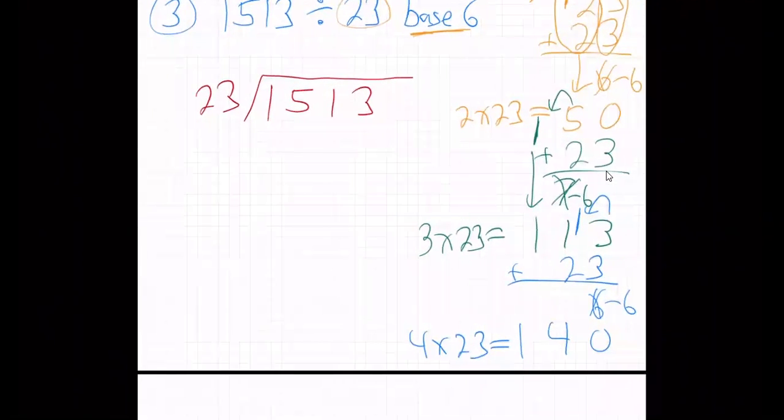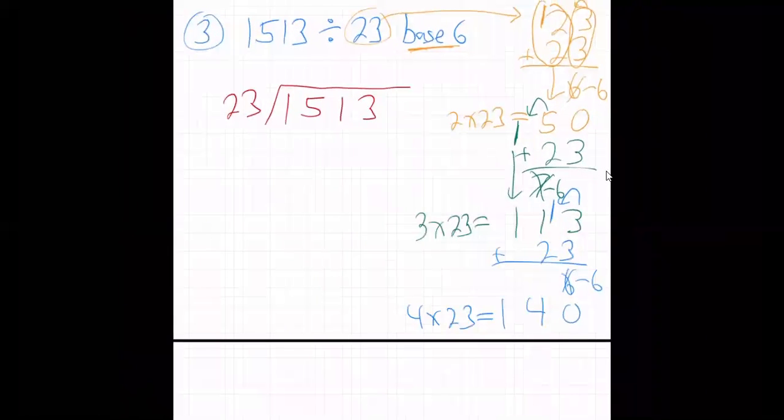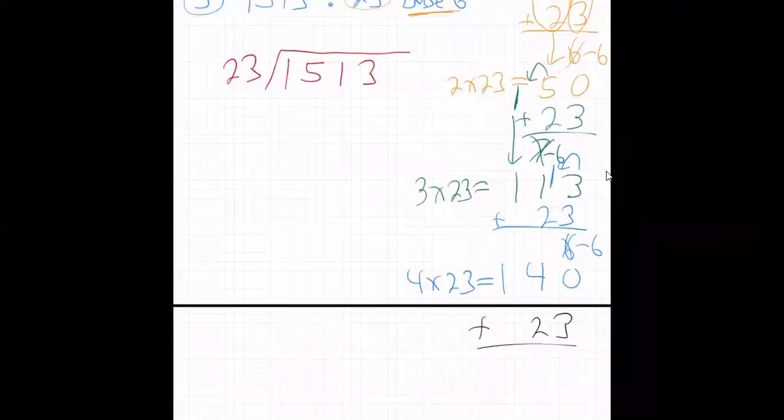Now do I need to do more? One more, yeah, because in base six, you got to go all the way to five, don't you? So I got to do one more of these, I'm kind of running out of room, maybe I'll do it over here, I'll just do it right down here, so add another 23, one more time.